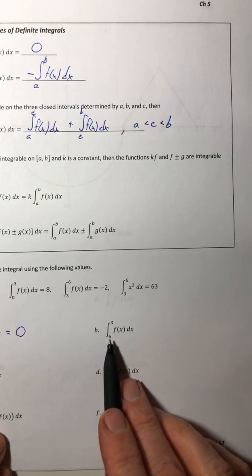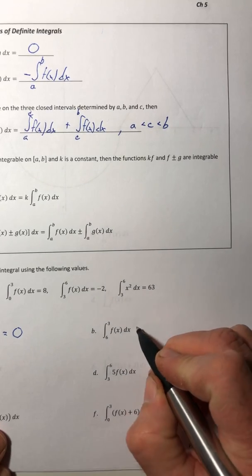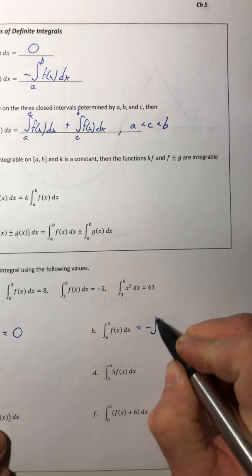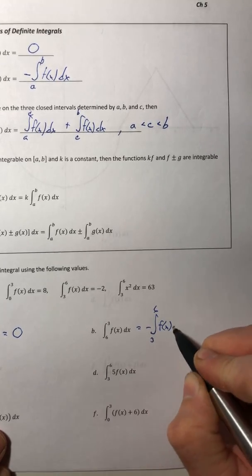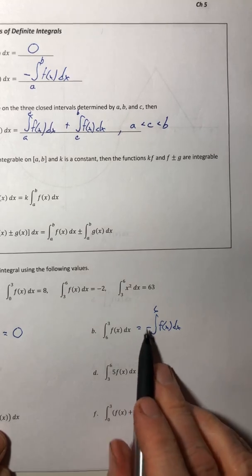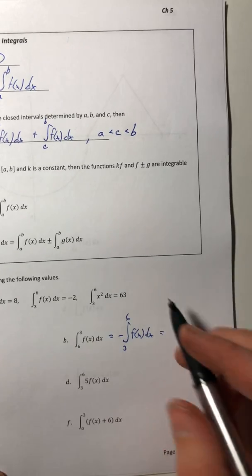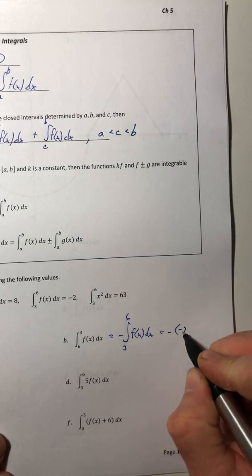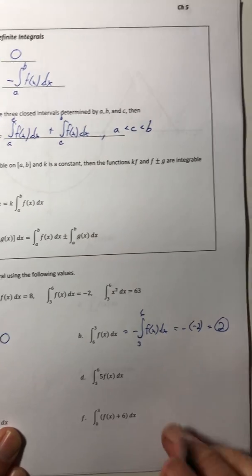For B, you're going from 6 to 3. Uh oh, that's out of order. So flip them and make a negative on the outside. And we know when you're going from 3 to 6, it's equal to negative 2. So the negative of negative 2 is 2.